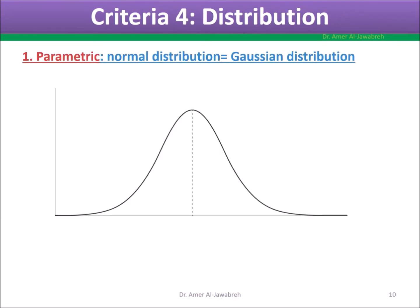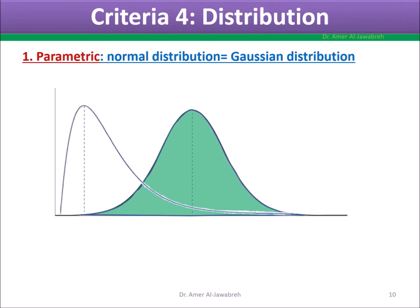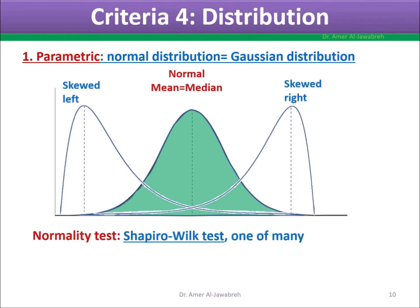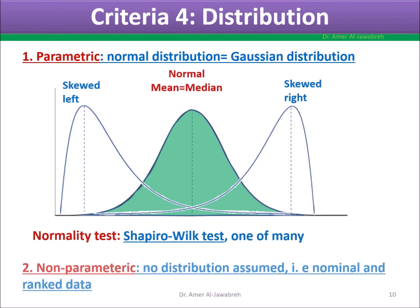Criteria 4: distribution. If data is parametric, like ratio data, test for normality — Gaussian or non-Gaussian. If data is non-parametric, like nominal or ordinal data, no distribution is assumed.